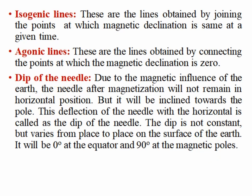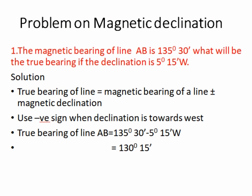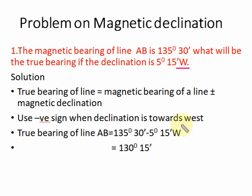Problem: the magnetic bearing of a line is given as 135°30', and the declination is 5°50' west. As we know, true bearing equals magnetic bearing plus or minus declination — positive for east, negative for west. Since the declination is west, true bearing equals magnetic bearing minus declination.